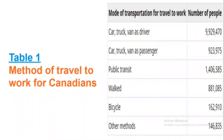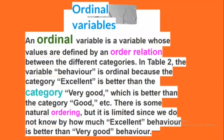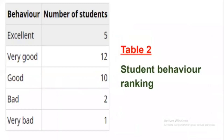An ordinal variable is a variable whose values are defined by an order relation between the different categories. In Table 2, the variable behavior is ordinal because the category excellent is better than the category very good, which is better than the category good, etc. There is some natural ordering, but it is limited since we do not know by how much excellent behavior is better than very good behavior.